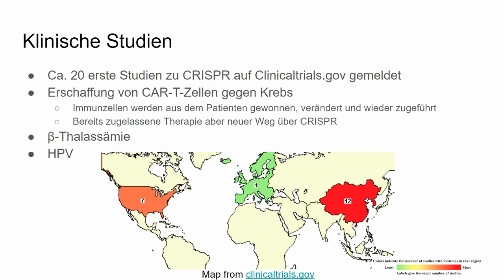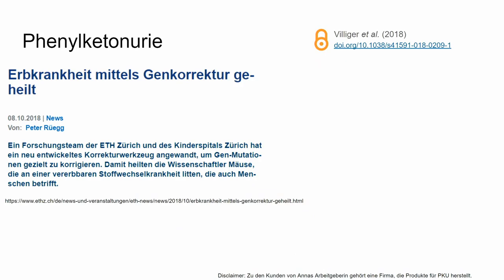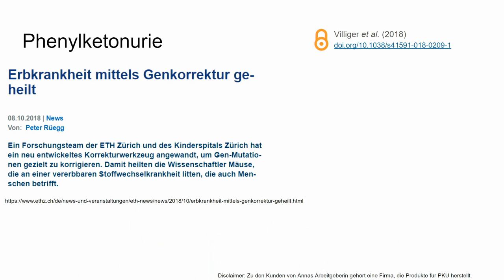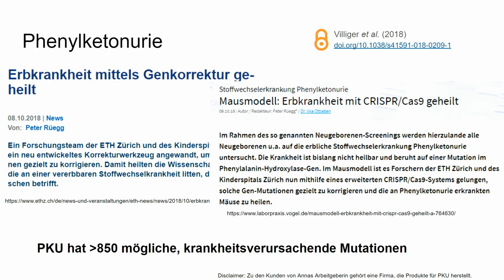There's also research on beta thalassemia, HPV — cutting out viral sequences. And phenylketonuria, which seems to have been cured, but if you read more, it has been done in a mouse model. The disease involves a gene being broken, but there are more than 850 possible mutations causing the actual illness. So they fixed one, but there may be more. Researchers should be more clear in communicating which model they used.